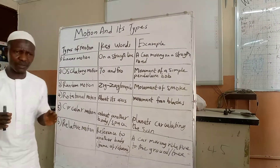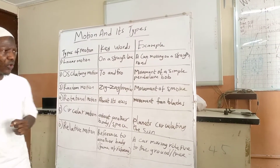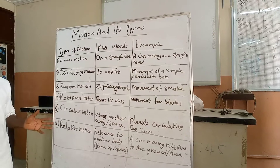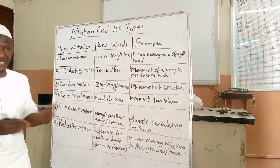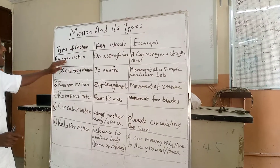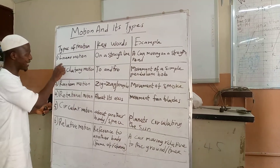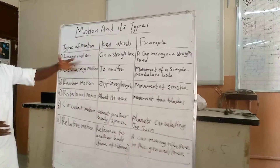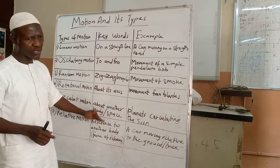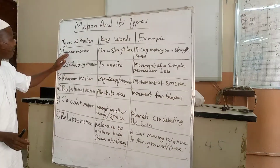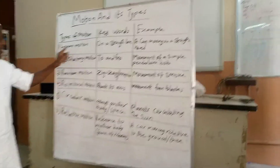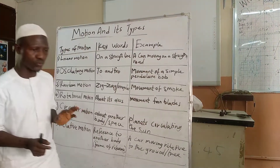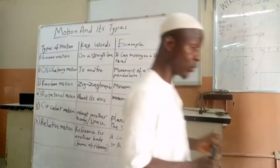We have different types of motion — that is, different ways by which an object can move from one point to another. The first one is linear motion. From the name, 'linear' contains the word 'line,' meaning straight — a straight line. Linear motion is the movement of an object on a straight line. An example is a car moving on a straight road, or when you are walking on a straight road — that is linear motion.